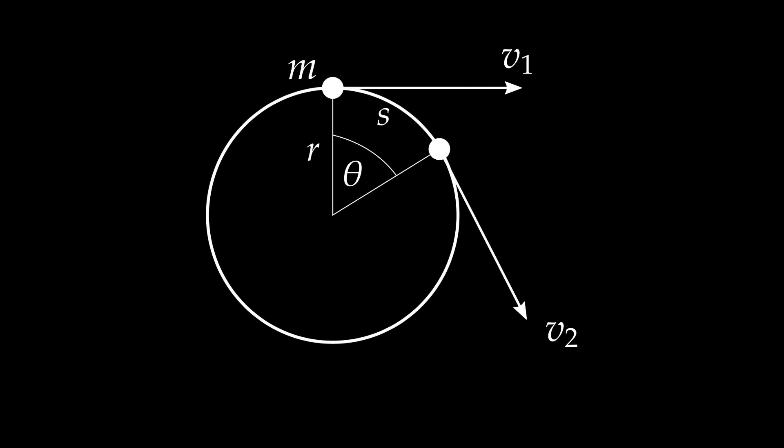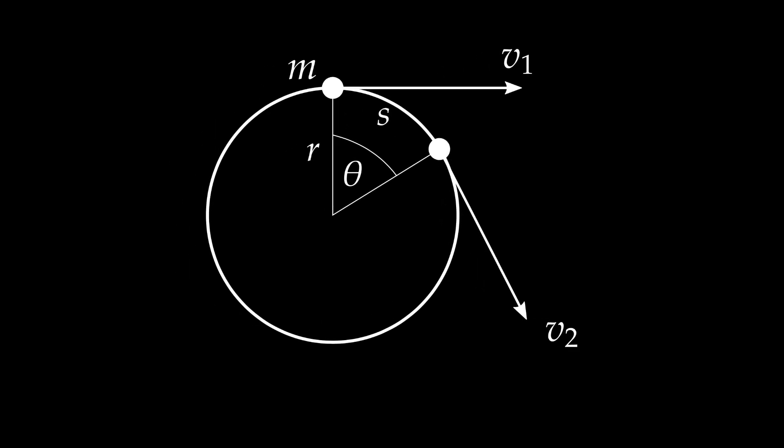Imagine an object of mass m going around in uniform circular motion with velocity v tangent to the motion. As time goes on, the position of the object changes — it travels along the arc and arrives at a new position with a velocity again tangent to the radius, and in doing so subtends an angle theta.